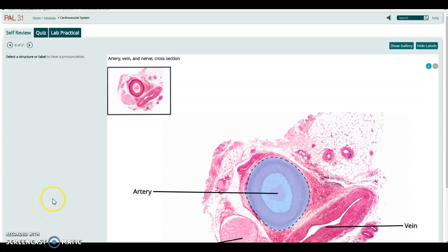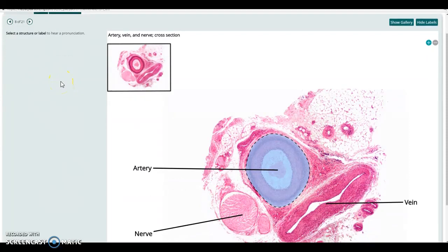All right, anatomy and physiology students, we're taking a look at the histology in the cardiovascular system using PAL. We're in the histology section looking at cardiovascular system. And of course, you also want to be sure to use your wish list, so you're just learning the actual terms that I would like you to know.